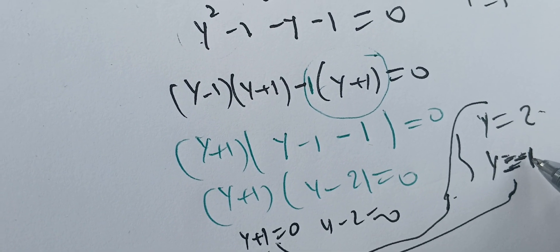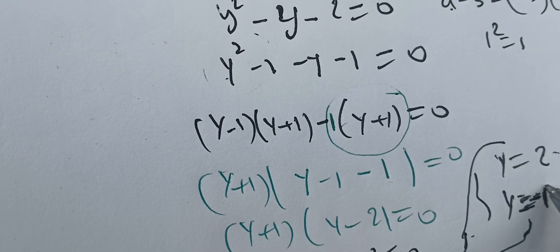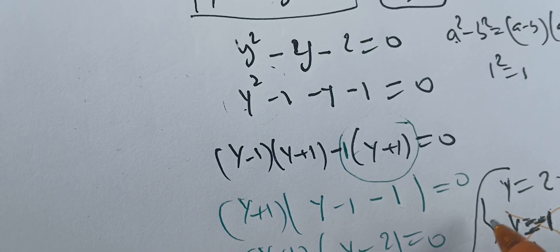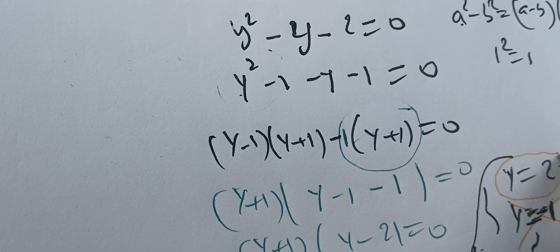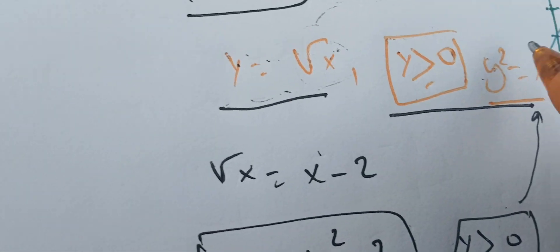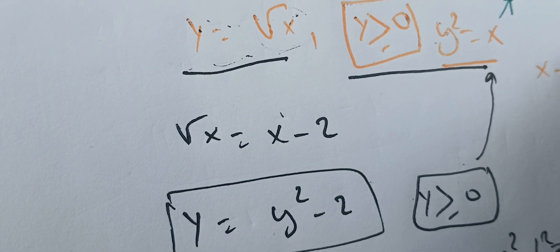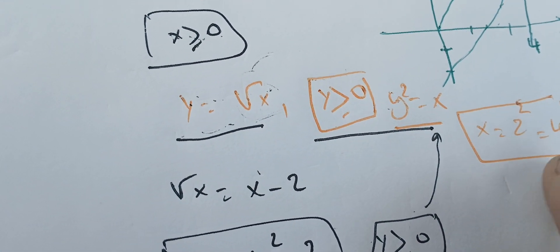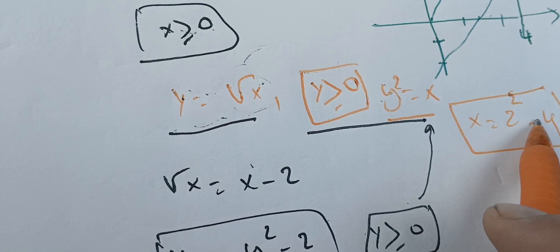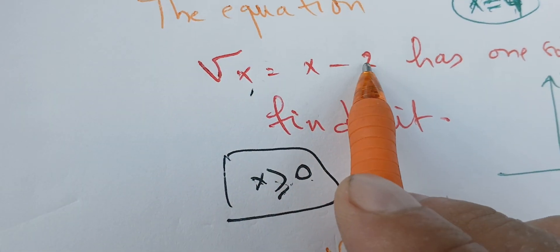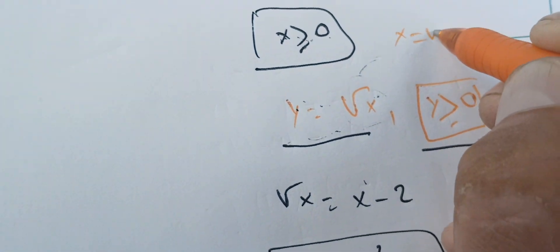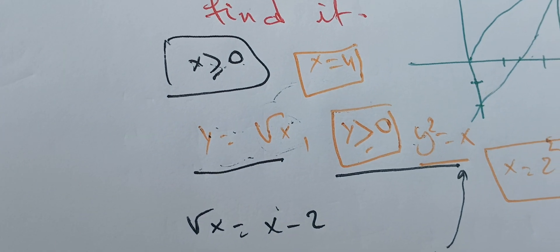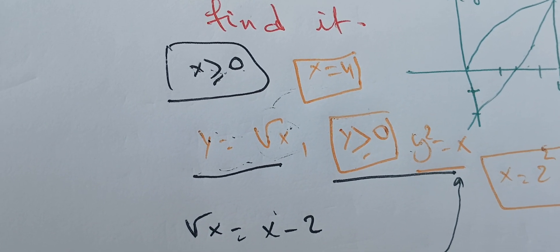We have Y equals 2 or Y equals minus 1. Since Y must be greater than or equal to 0, we reject Y equals minus 1. We are left with Y equals 2. Since Y squared equals X, we get X equals 2 squared, which is 4. We verify: X equals 4 is positive and satisfies the original equation, so X equals 4 is the solution.